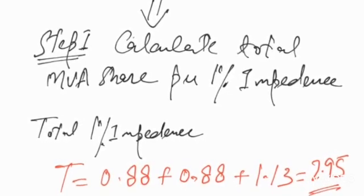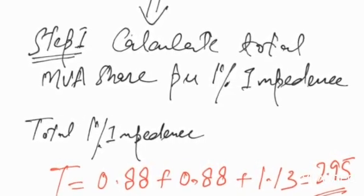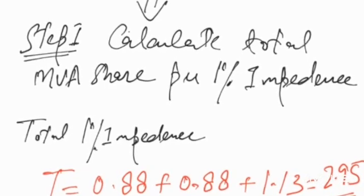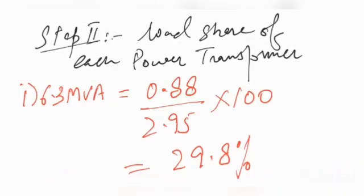Calculate total percentage impedance per share, 1% impedance. That will be T equal to 2.95 for these three transformers.